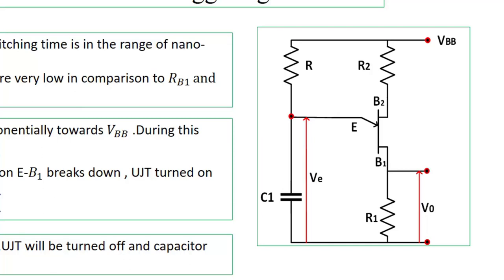It is to be noted here that if the capacitor voltage is less than the valley voltage after discharging, then the UJT will be off and the output voltage will be zero. Again, the capacitor will charge and discharge at peak voltage. So this cycle will repeat.